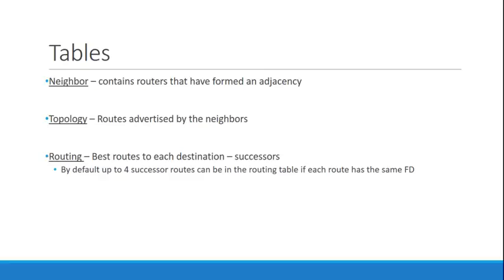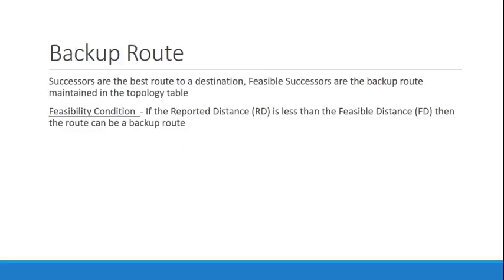Next, we're going to look at feasible distance, reported distance, and specifically as it pertains to a backup route. Successors are the best route to the destination, whereas feasible successors are the backup route maintained in the topology table.